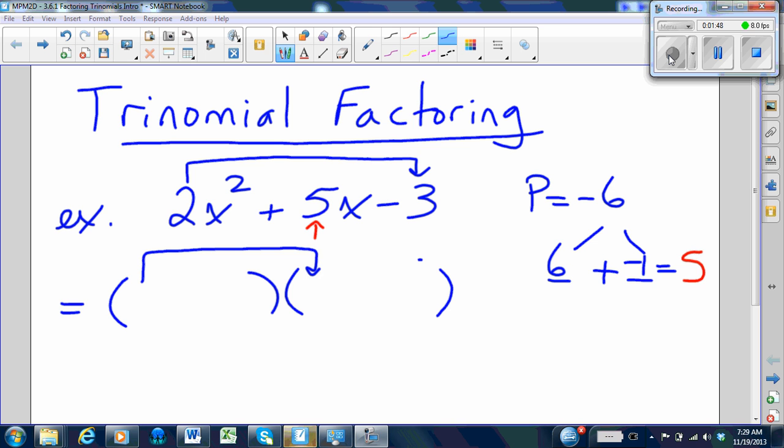So the first terms in the brackets would be these two terms here. Those two terms have to multiply to the first term that's in your trinomial, which is 2x². So the numbers have to be 2x and x. And this is where normally you would use trial and error to figure out the other two numbers.